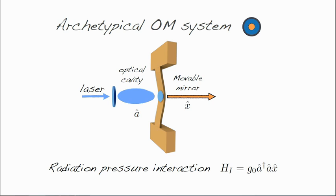The archetypal optomechanical system is a Fabry-Perot cavity with a movable mirror driven by a laser. The photons inside the cavity are reflected by the movable mirror and thus transfer momentum to the mirror. On the other hand, the displacement of the movable mirror changes the cavity length and thus its optical eigenfrequencies.